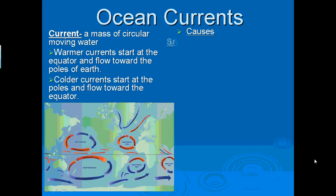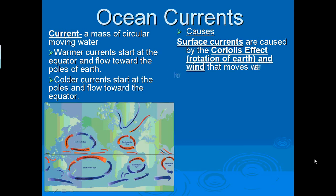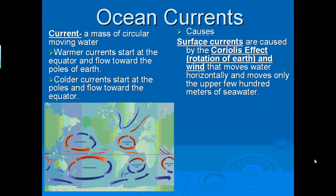What causes ocean currents? Surface currents are caused by the Coriolis effect, which is simply the rotation of the earth and wind, that moves the water horizontally and moves only the upper few hundred meters of seawater. So surface currents are the upper part of the water in the ocean. It's caused by the Coriolis effect and wind.